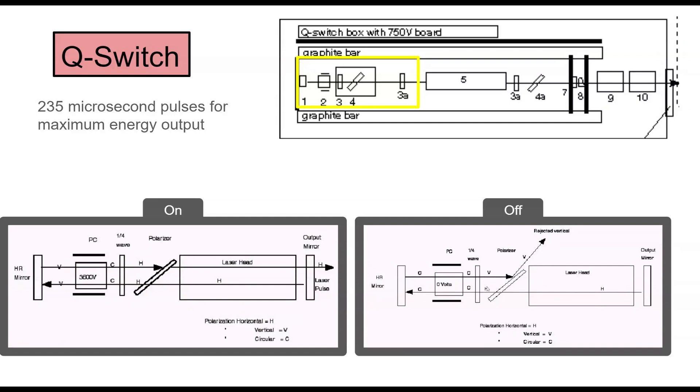But when it's off, it only gets 45 degrees, bounces off the mirror, and another 45 degrees. So it gets rejected at this polarizer because it's vertical. So that's how the Q-switch works here.